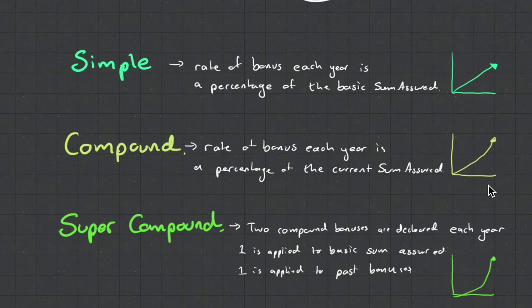Super Compound is when two compound bonuses are declared each year. One is to the basic sum assured and the other one is to the past bonuses. So not only is your sum assured increasing, but the amount of your bonuses percentage is also increasing.